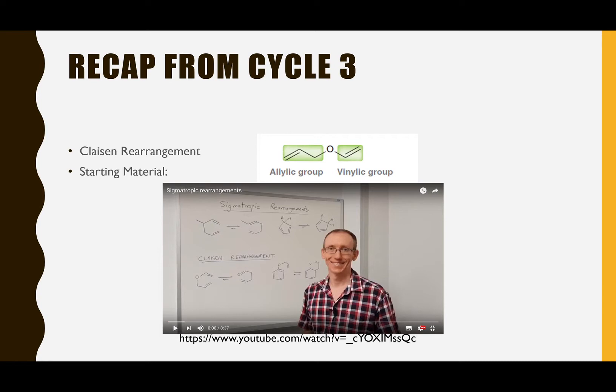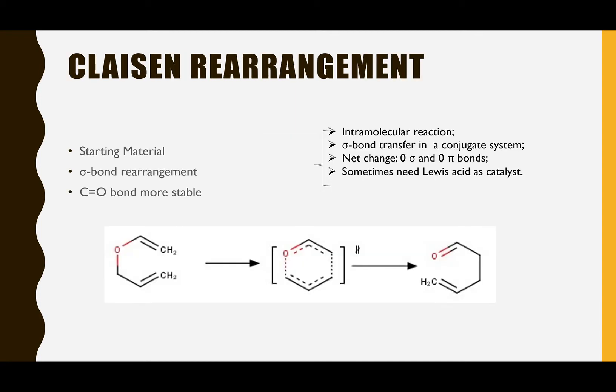In a previous lecture, we also learned the Claisen rearrangement, where the substrate material undergoes an intramolecular rearrangement upon heating and eventually forms a more stable product. The cyclic transition state explains the mechanism of sigmatropic rearrangement, allowing electrons to move along the conjugated system. The carbonyl group stabilizes the major product, favoring the forward reaction.